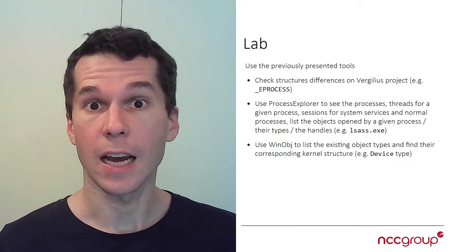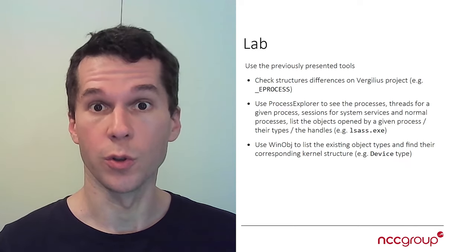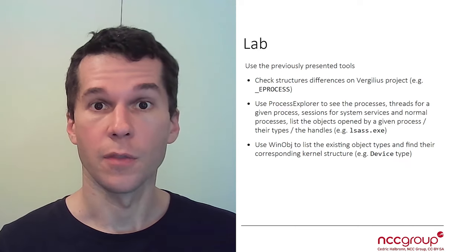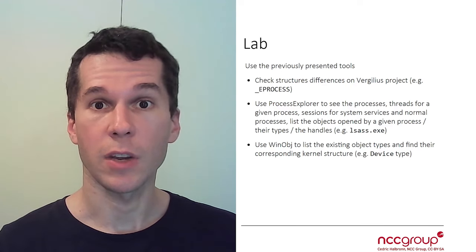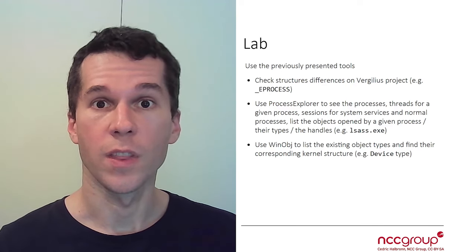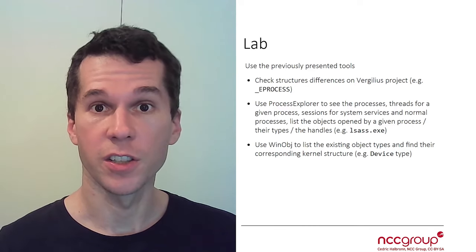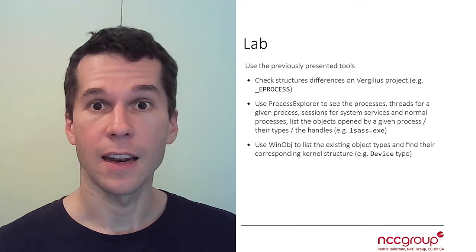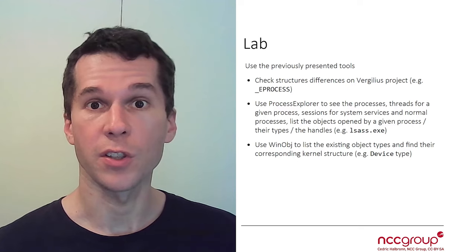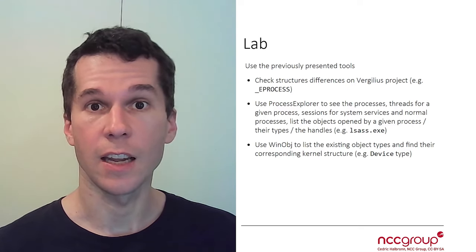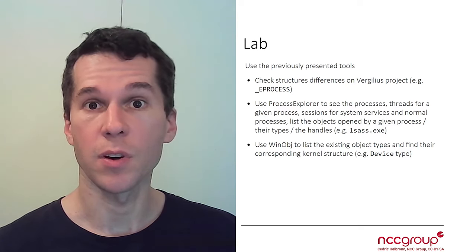Now it is going to be time for you to do the work. The first thing you're going to have to do is go on the Vergelius Project website and start poking around with the actual structures. You're going to have to find one structure and then see if there is any difference between different versions of Windows 10. For instance, you can look at the eProcess structure.